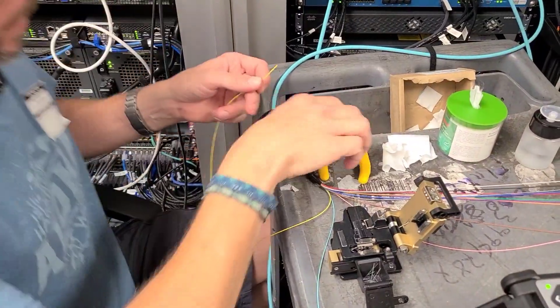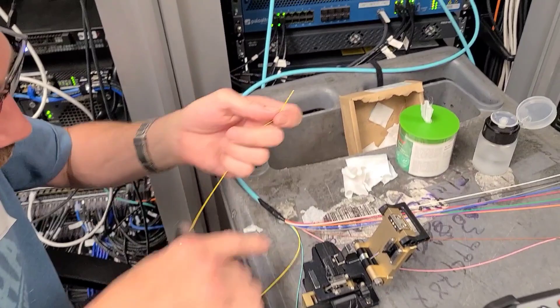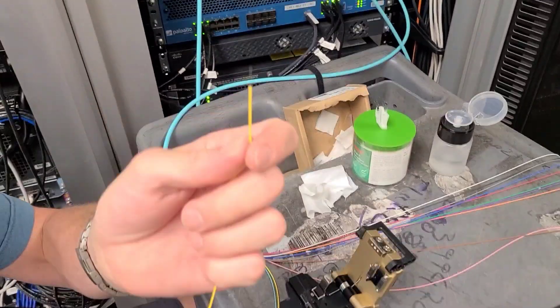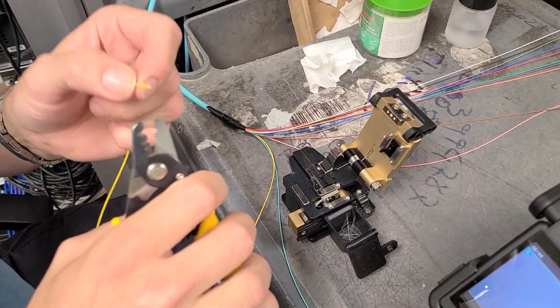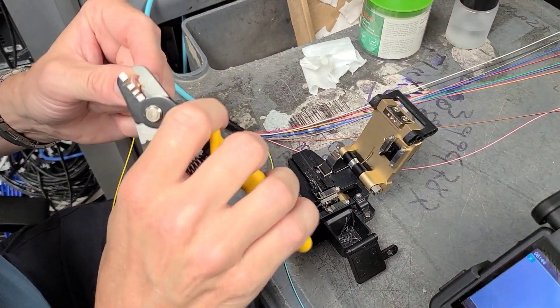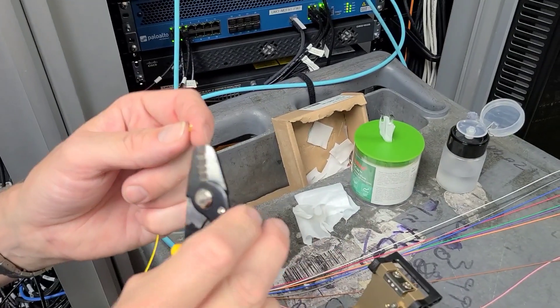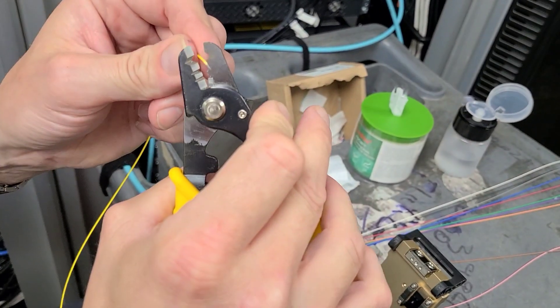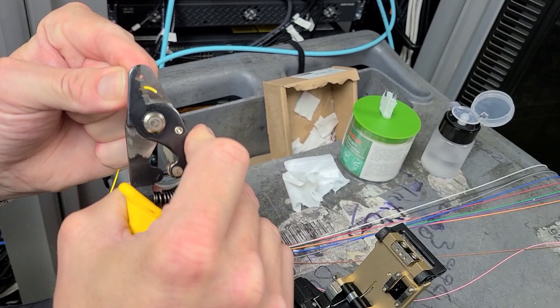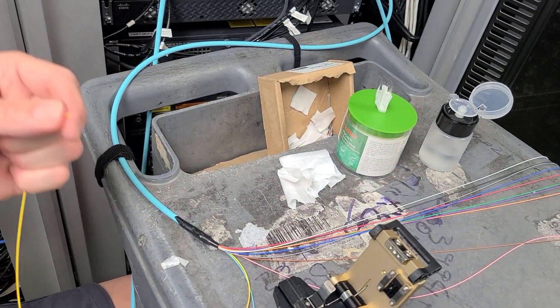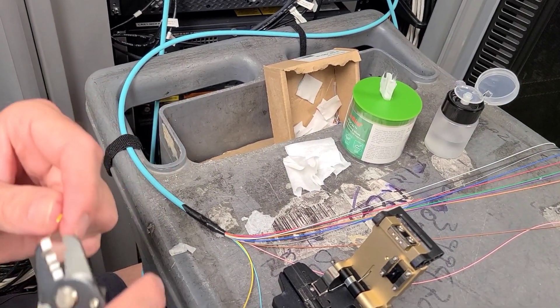All right, so here we got our 12 strand fiber. This right here is one of the 12 strands. So what we have to do, we have to strip it. We take our strippers here, we got three holes. We start with a second and the third one and just put the fiber into it, strip it back like that.